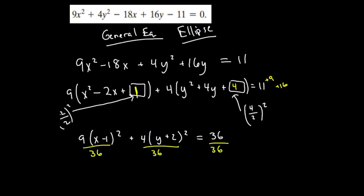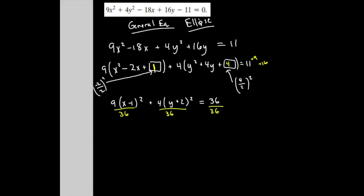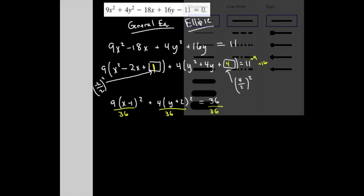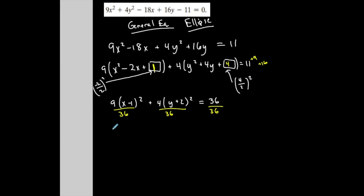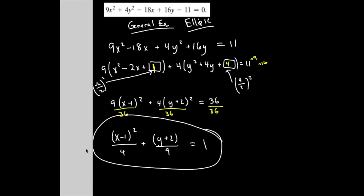The numbers work out nicely. The 9 and the 36 cancel giving me 4, the 4 and 36 cancel giving me 9, and over here is 1. Now I am in the standard form of the equation of an ellipse.